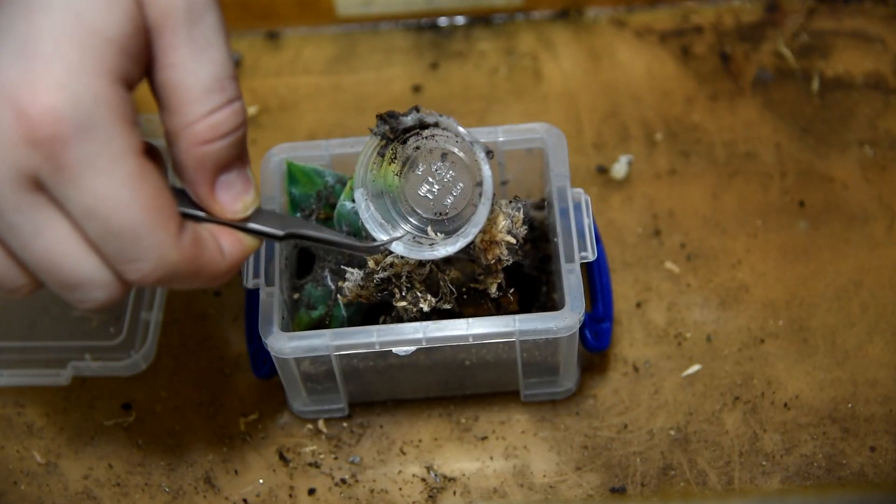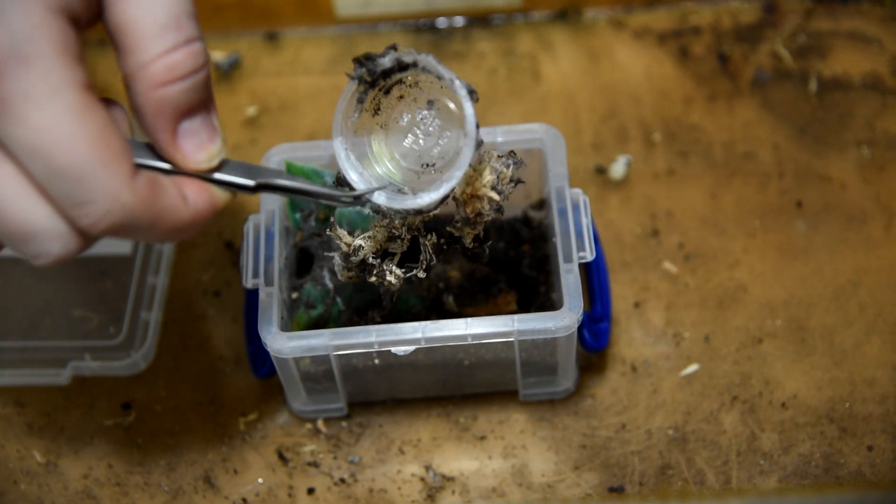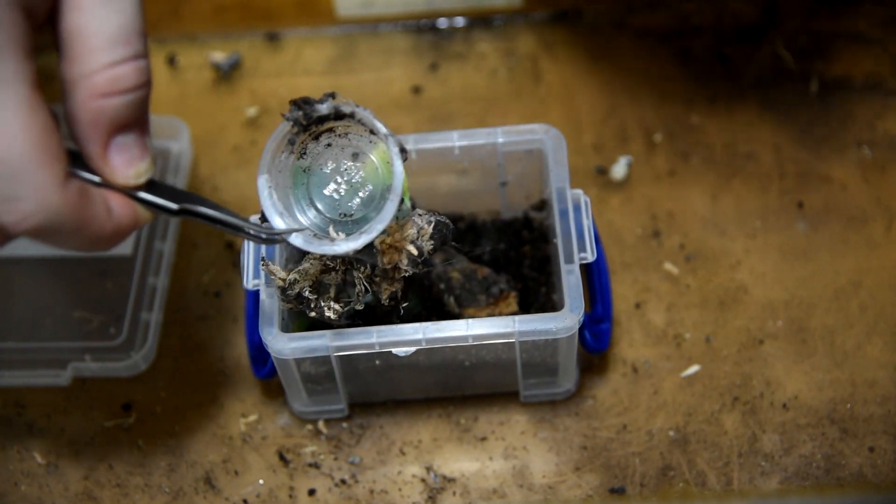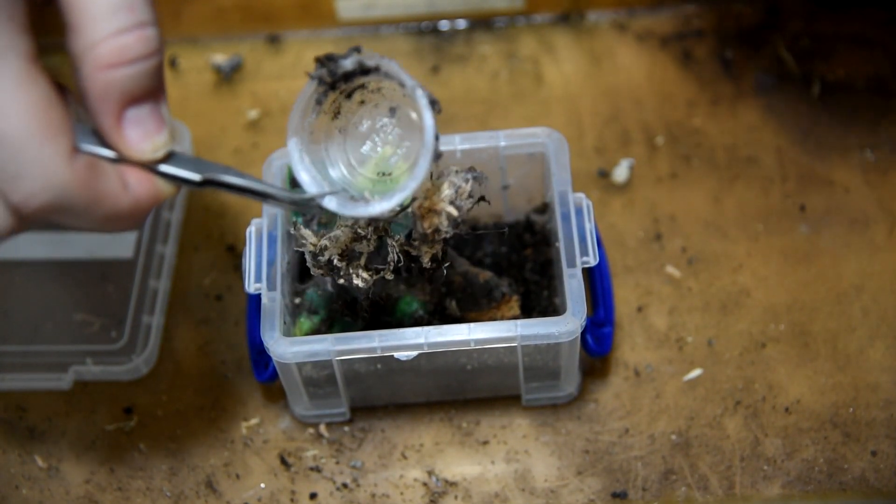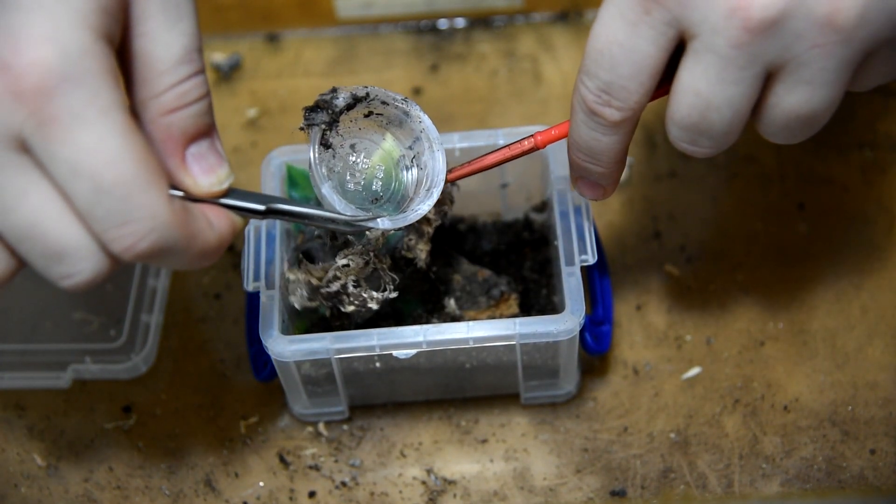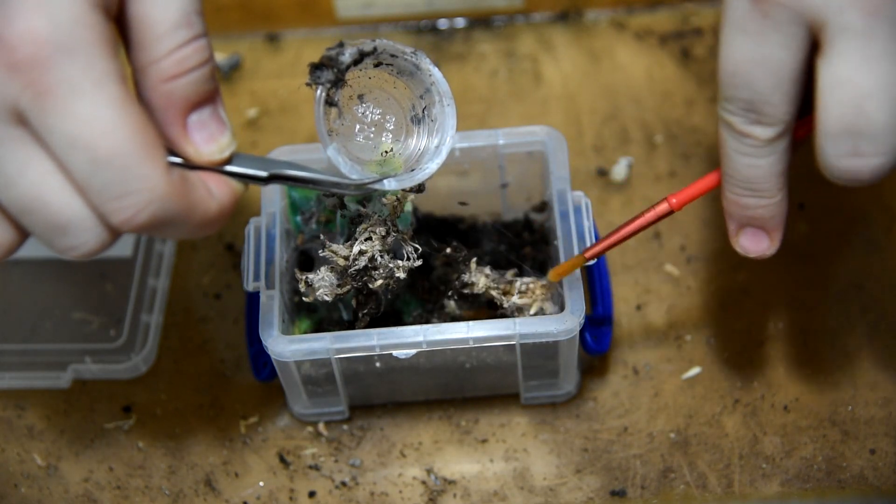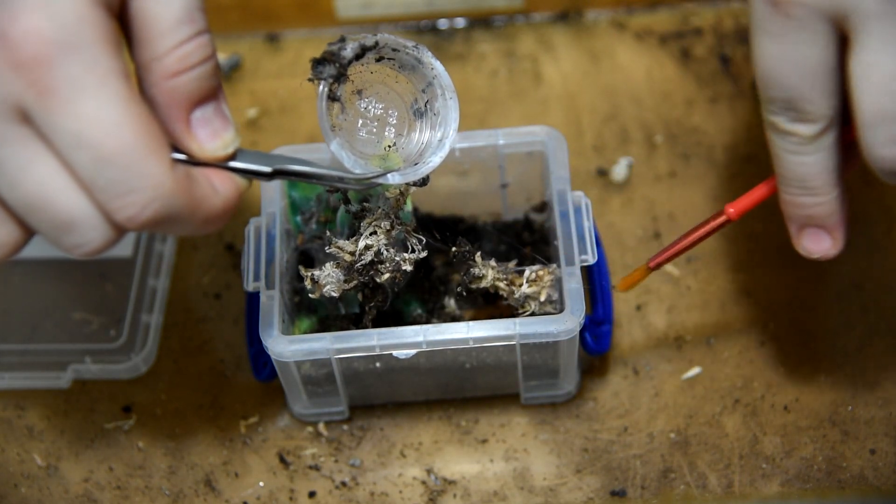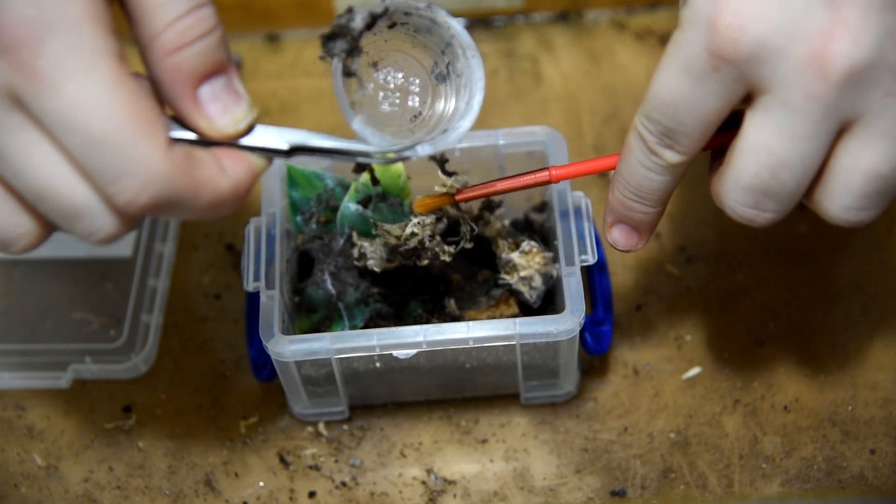Now this enclosure is obviously getting far too small for him. The goal here is to find him without disturbing him too much. Take these webs off just in case he's in there and just take out the water dish at first.